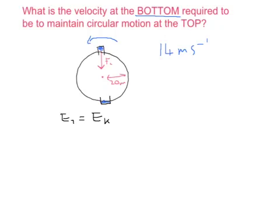And at the top, the total energy will be a combination of—we'll call this EK1 down the bottom—the total energy will be a combination of the new kinetic energy, EK2, plus the gravitational potential energy, EP.